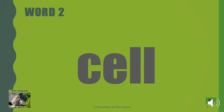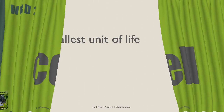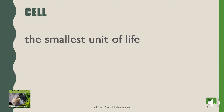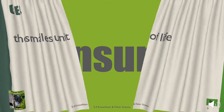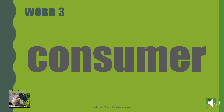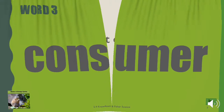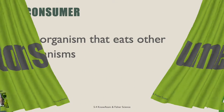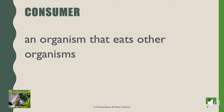Cell. A cell is the smallest unit of life. Consumer. A consumer is an organism that eats other organisms.